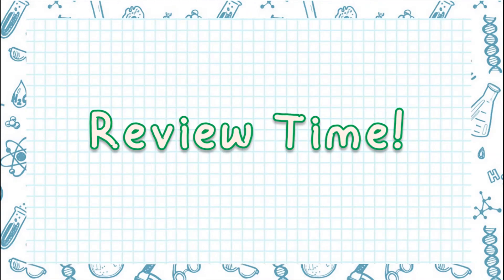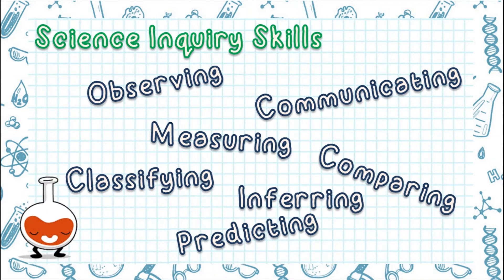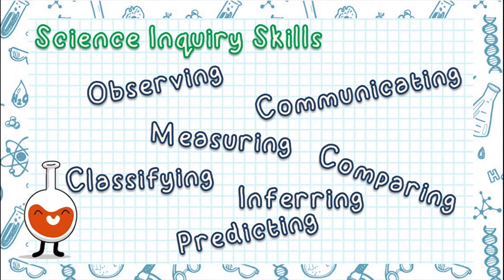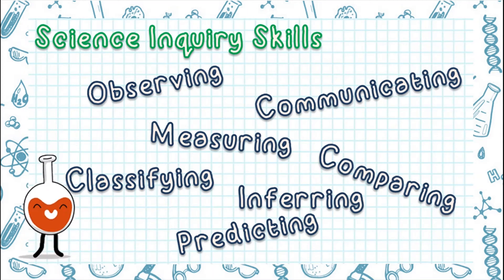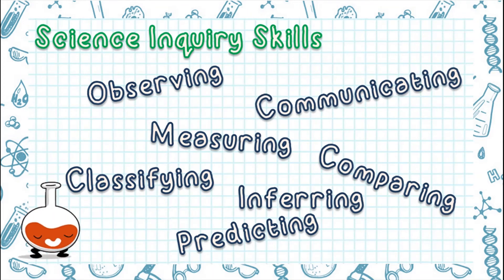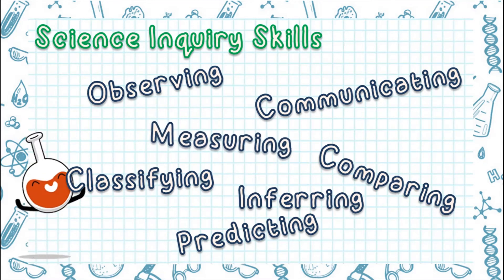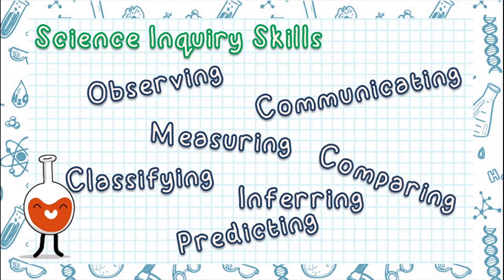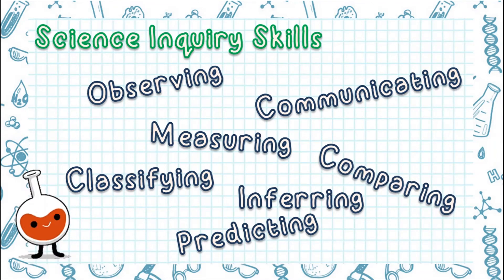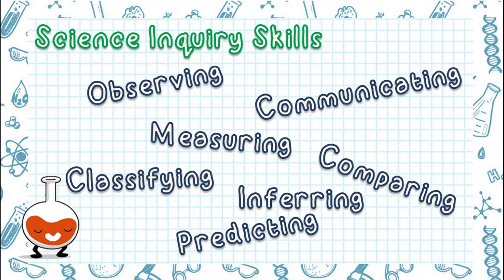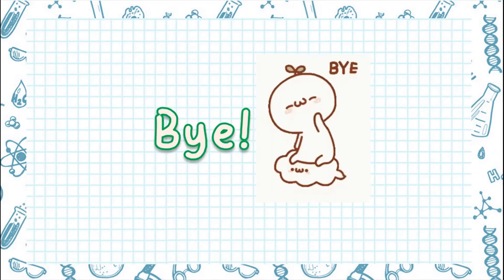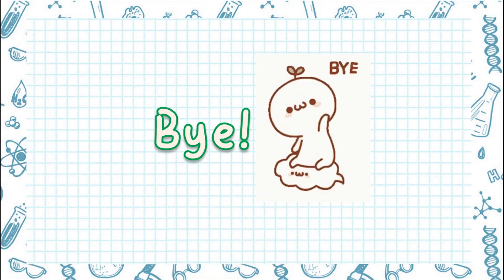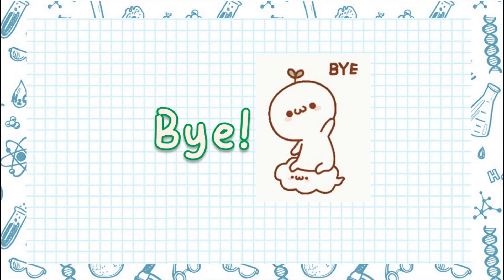Now, let's review our lesson. Scientists use science inquiry skills to answer questions about science. These skills are: observing, or gathering information using our senses; communicating, or writing down, drawing, or presenting data to show others; measuring, or getting data from objects using measuring tools; comparing, or seeing how two things are alike and different; classifying, or grouping similar things together; inferring, or answering the question, what happened?; and predicting, or answering the question, what will happen next? These skills will help you a lot in science. Good luck and that's it for today. I hope that you learned a lot in our lesson. Bye!